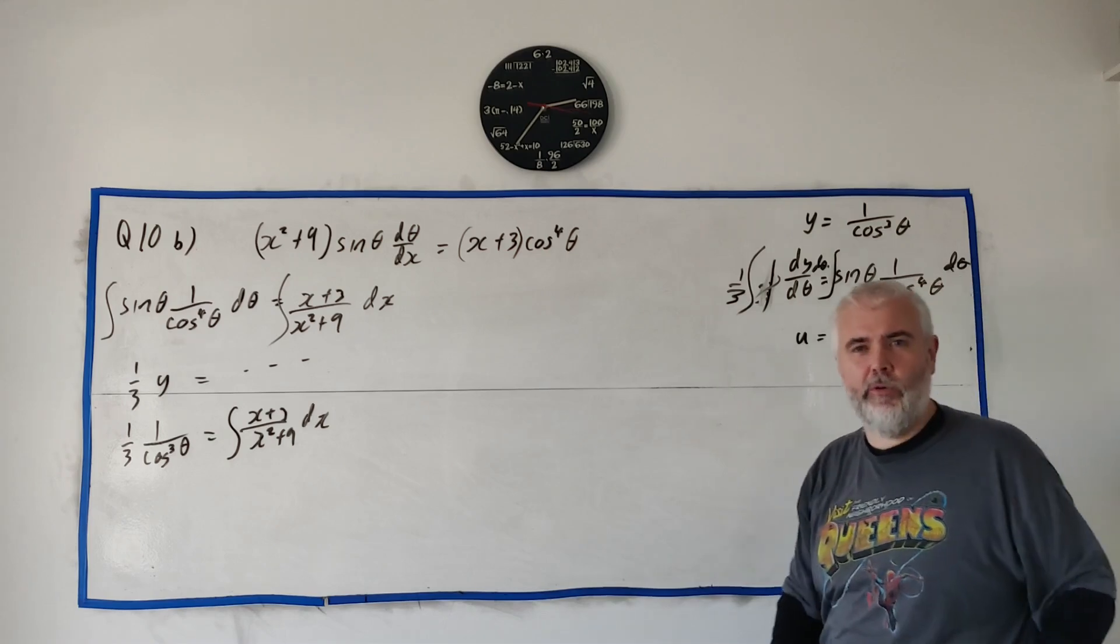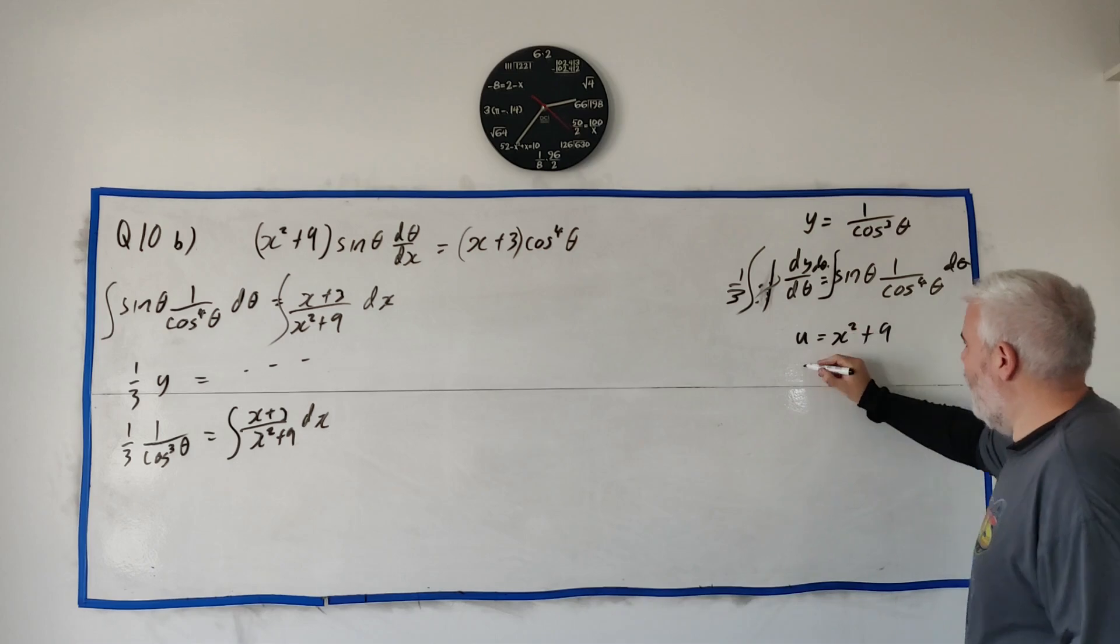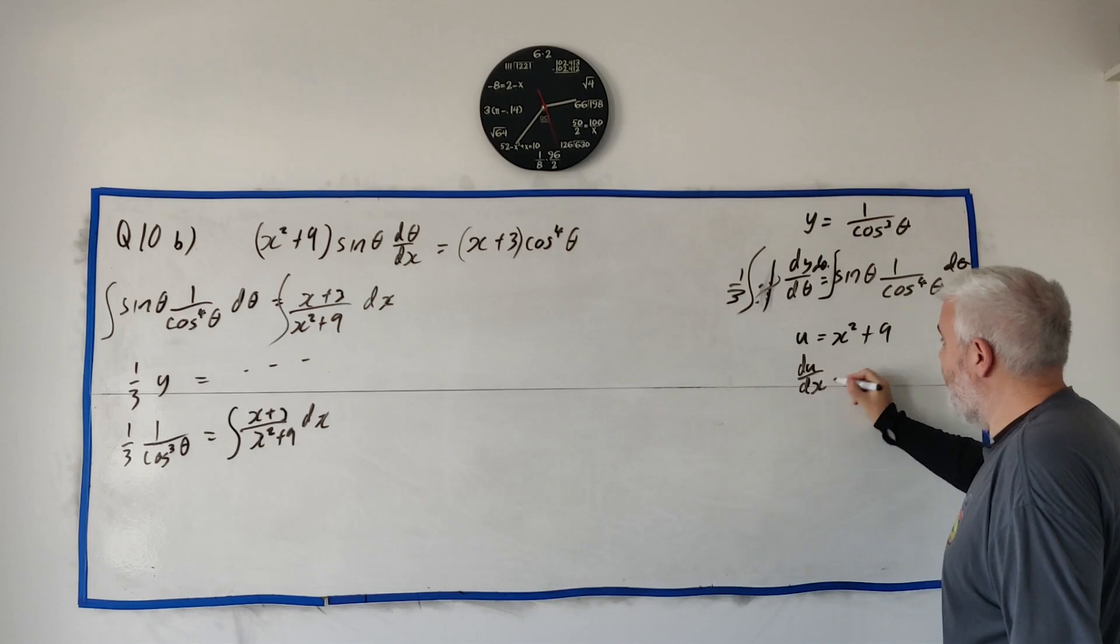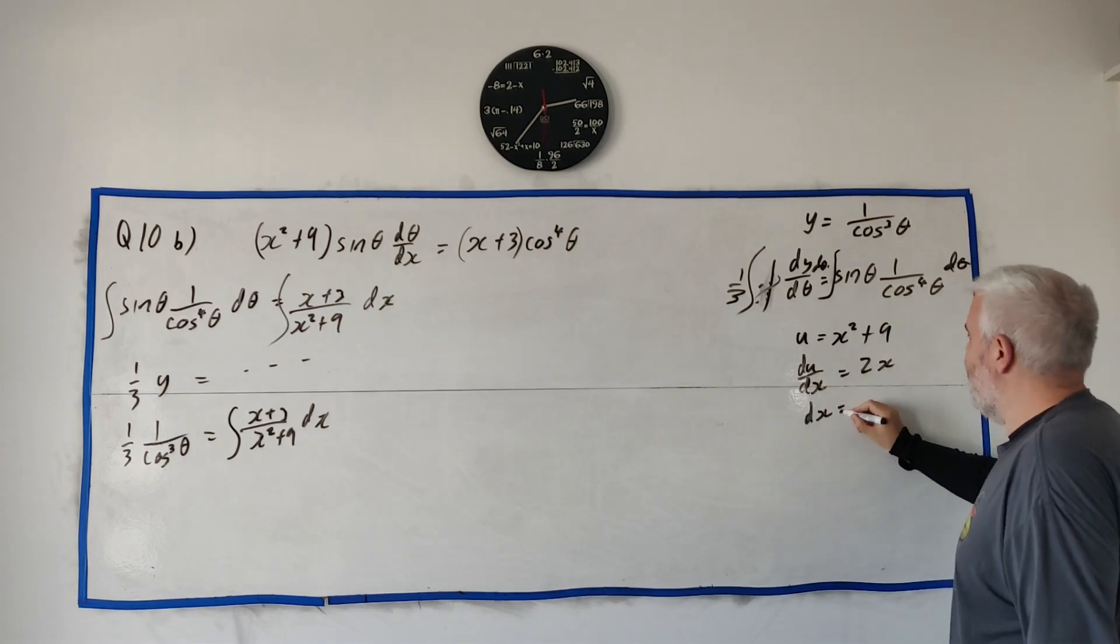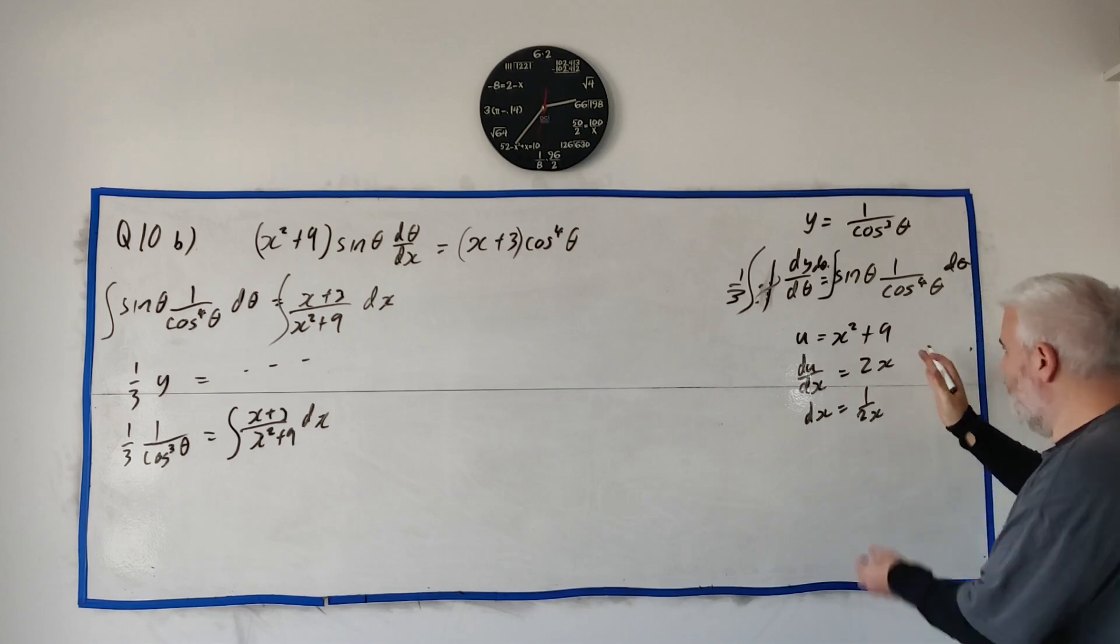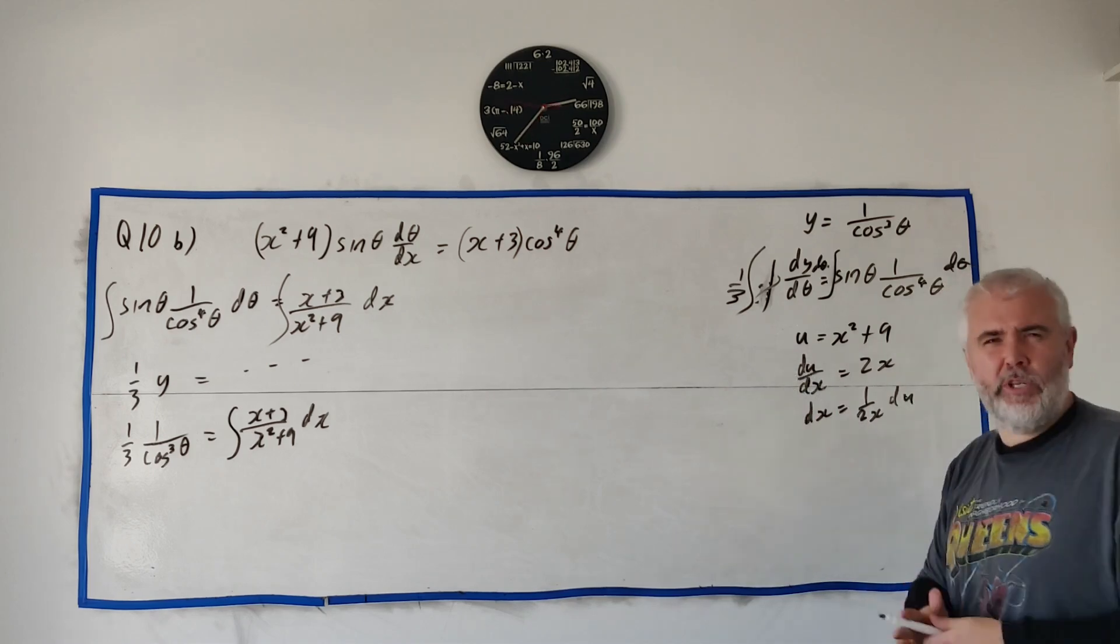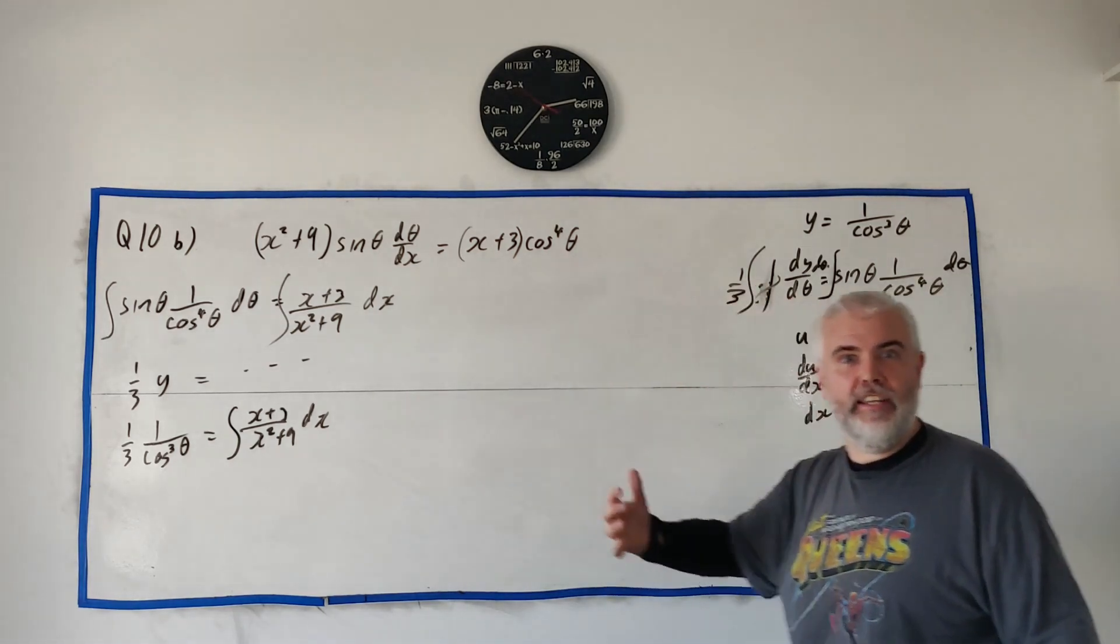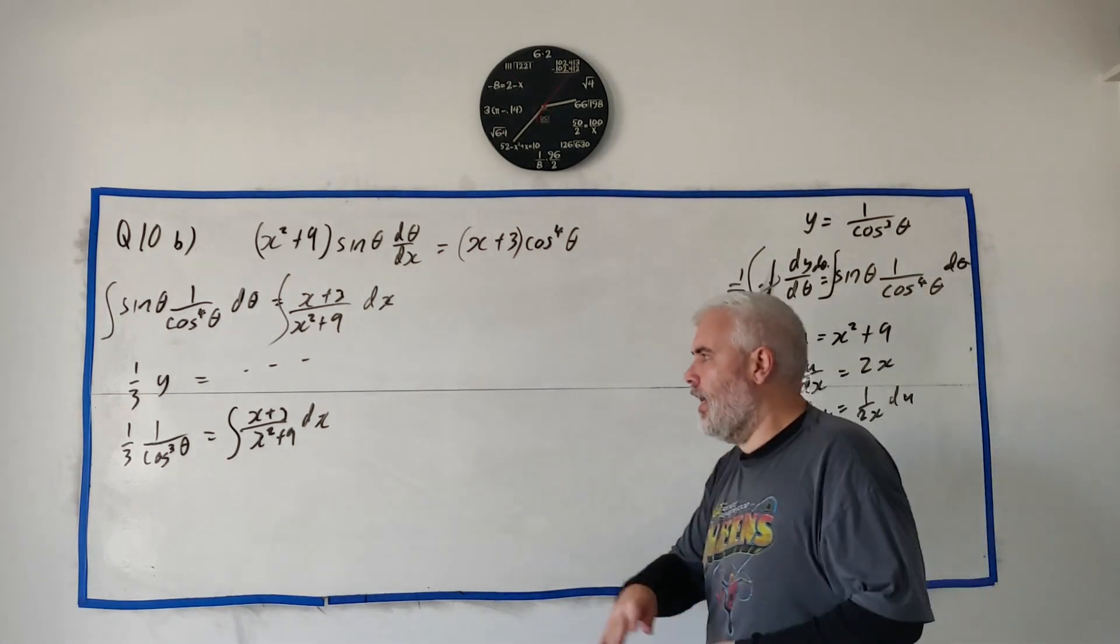Substituting the bottom row: u equals x squared plus 9. When we substitute, we differentiate to replace dx. Differentiate to get du equals 2x dx, then rearrange: dx equals 1 over 2x du. We end up dividing in integration.